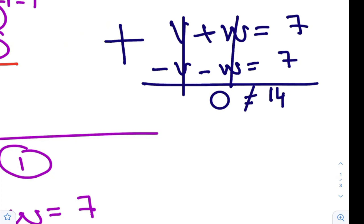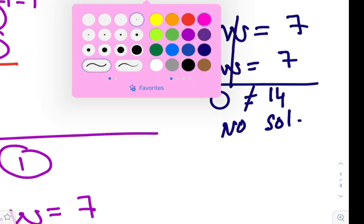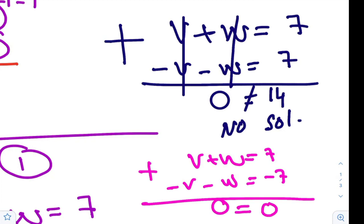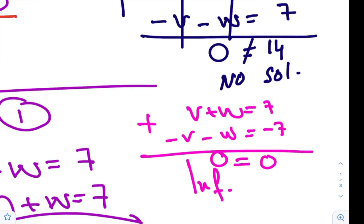Since 0 is not equal to 14, so we have no solution. While if you have here negative 7, if you have here same combination and you add everything, you end up with 0 equals 0, then you will have infinitely many solutions.